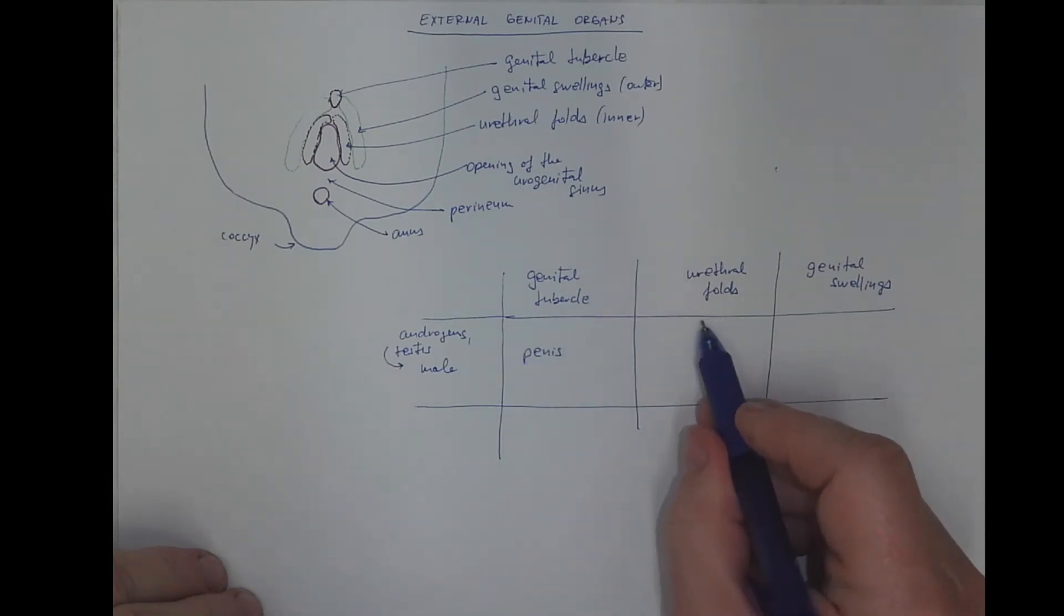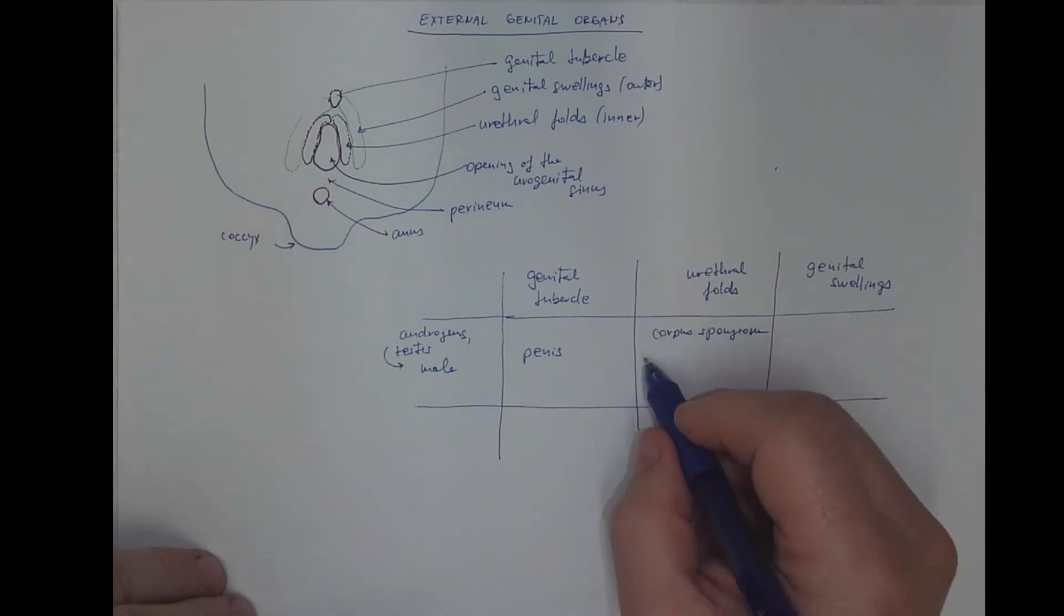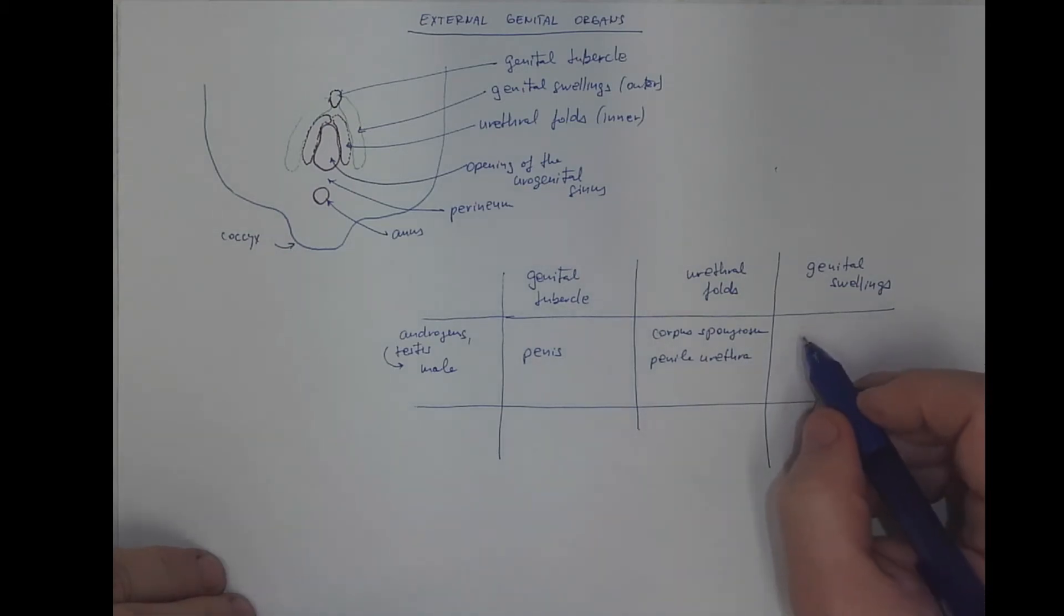The urethral folds will become the corpus spongiosum, surrounding the spongy urethra or penile urethra, and the genital swellings will fuse to form the scrotum.